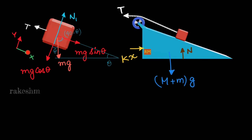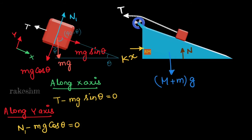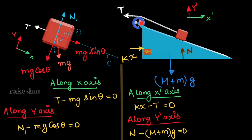I am taking along the incline as x-axis and perpendicular to the incline as y-axis. Along the x-axis, T and mg sin theta are balanced. We can write T minus mg sin theta equals to 0. Along the y-axis, normal reaction balances mg cos theta. We can write N minus mg cos theta equals to 0.